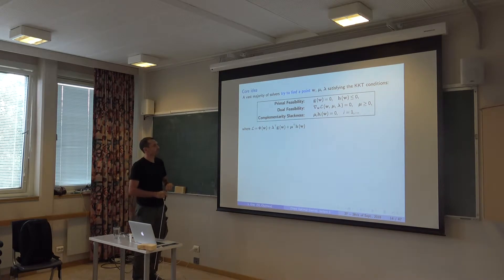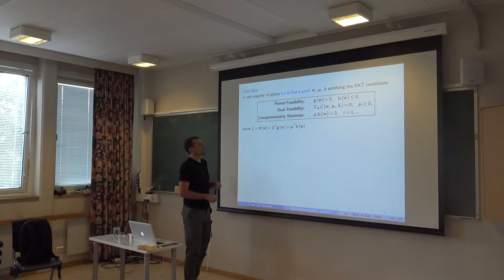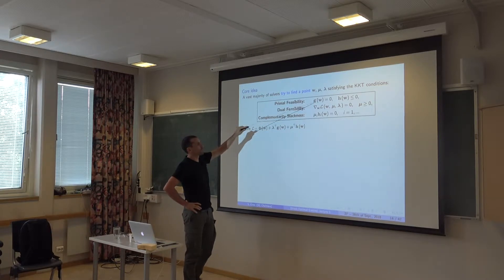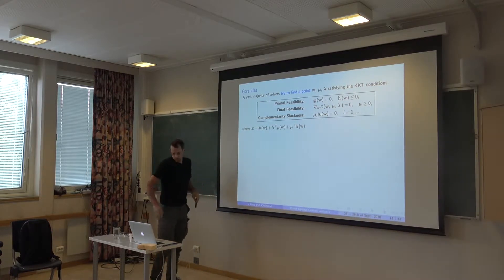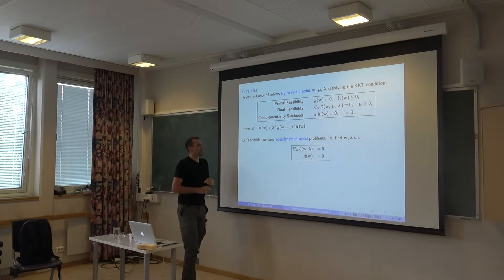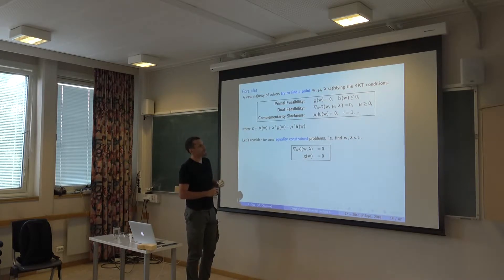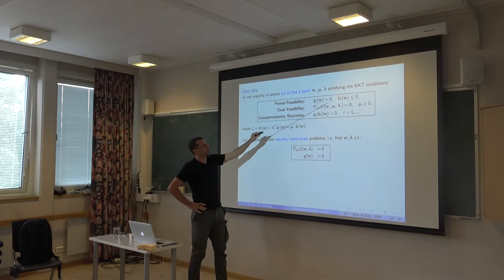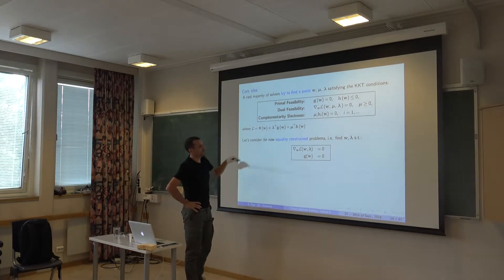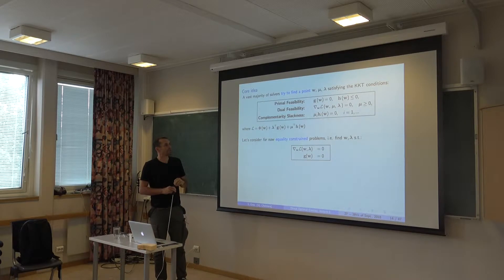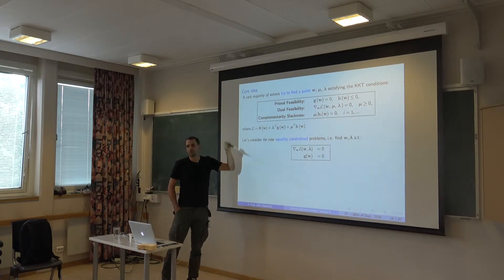We can come back to the KKT conditions again. KKT points satisfying primal feasibility, the constraints, stationary of the Lagrange function. In order to start discussing Newton and the KKT conditions, it would be a good idea to focus on something a bit less complex. We have inequality constraints here, and we don't know yet how to handle that in Newton — that's actually problematic to handle via Newton.